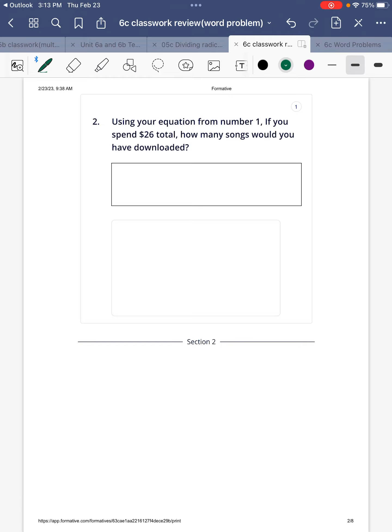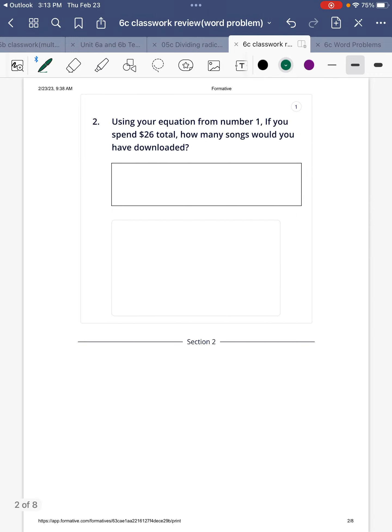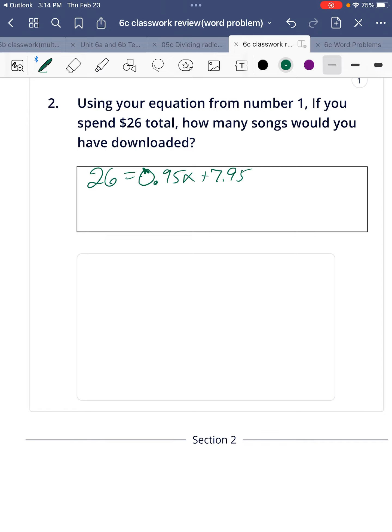Alright, now using the equation from number one, if you spend $26, how many songs can you have downloaded? So spending $26, the y is how much you spend or how much you want to spend. So it's going to be 26 equals 0.95x plus $7.95.